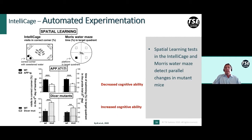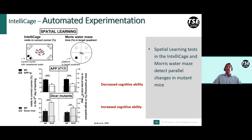Several papers have published direct comparisons between spatial learning in the IntelliCage and in the Morris water maze. In an Alzheimer model, a decreased cognitive ability can be seen in the IntelliCage spatial learning task, similar to what is seen in the Morris water maze. Conversely, a single gene inactivation leading to increased cognitive ability has also been confirmed in both the IntelliCage and the water maze.